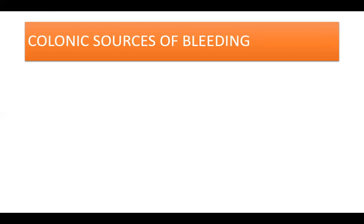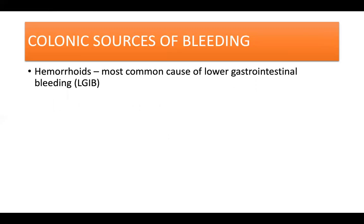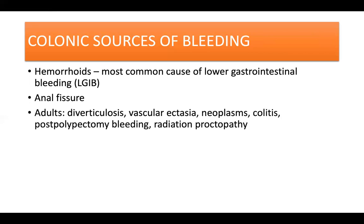For colonic sources of bleeding, hemorrhoids are probably the most common cause of lower GI bleeding. Anal fissures also cause minor bleeding and pain. If these local anal processes, which rarely require hospitalization, are excluded, the most common cause of lower GI bleeding in adults is diverticulosis, followed by vascular ectasias especially in the proximal colon of patients above 70 years old, neoplasms, colitis, post-polypectomy bleeding, and radiation proctopathy.